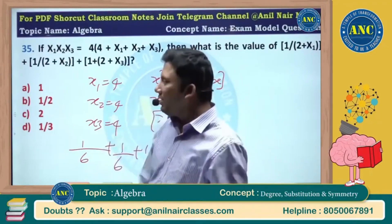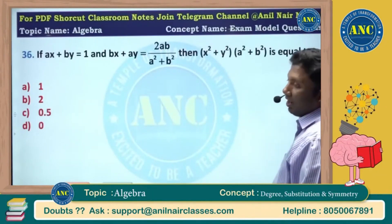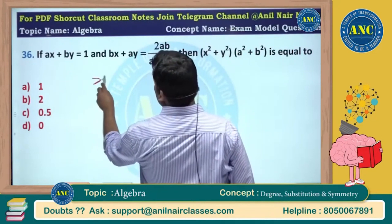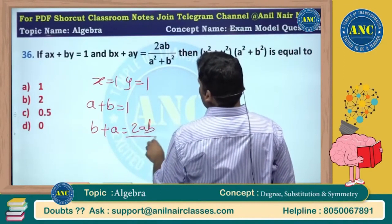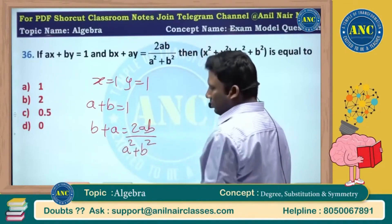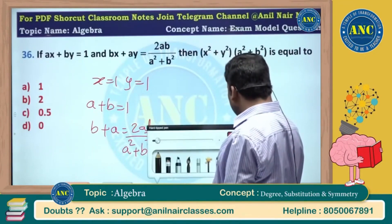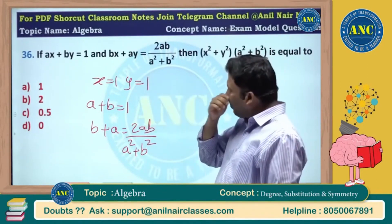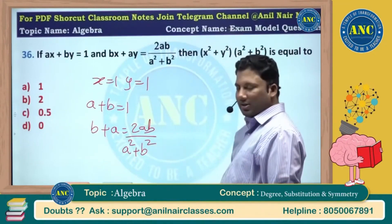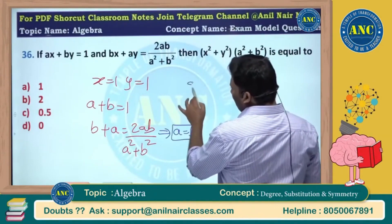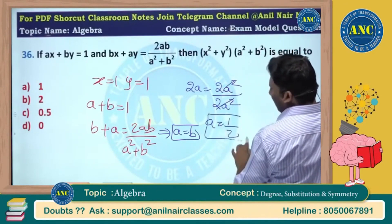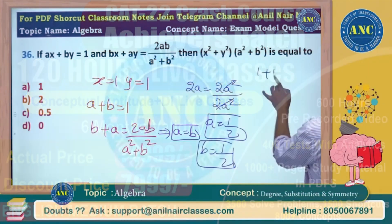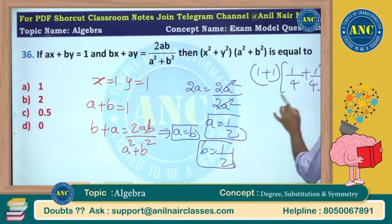A symmetric function is a function where all the variables should be equal. Given ax plus by equivalent to 1, let me put x value 1, y value 1, so a plus b equivalent to 1, and b plus a equivalent to 2. For a square plus b square — now see here, I kept x=1, y=1, giving a plus b equivalent to 1, so ab by a square plus b square — again symmetric function. Make a equivalent to b: 2a equivalent to 2, so a square by 2a square, which cancel, giving a equivalent to 1 by 2. If a is 1 by 2, b is also 1 by 2: 1 plus 1 into 1 by 2, then 1 by 4 plus 1 by 4, giving 2 into 1 by 2, which is 1. Answer is 1.